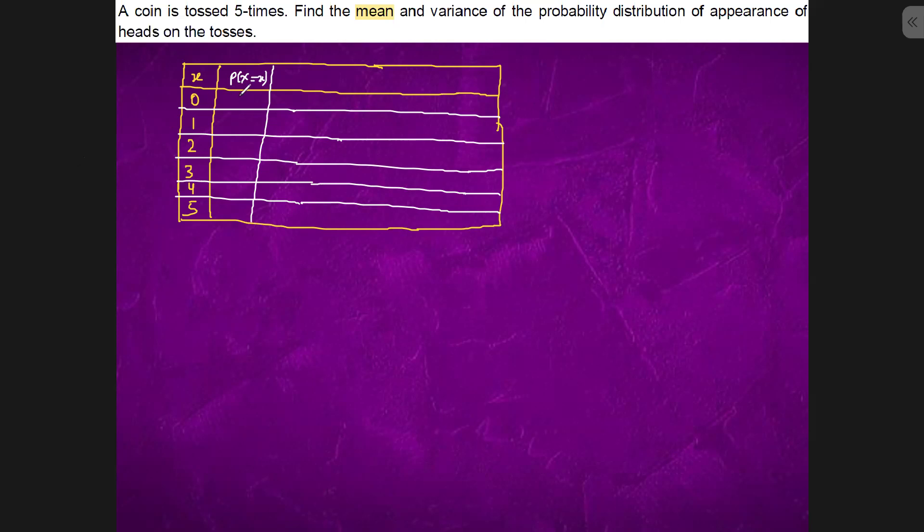Okay, so this is 5C0, 1 by 2 to the power of 5, so it is 1 by 32. This is 5C1, 1 by 2 to the power of 5, it will be 5 by 32. 5C2, it will be 1 by 2 to the power of 3. P is 1 by 2, Q is 1 by 2.